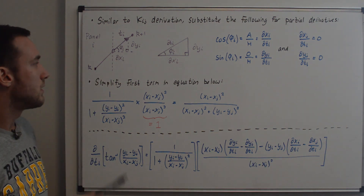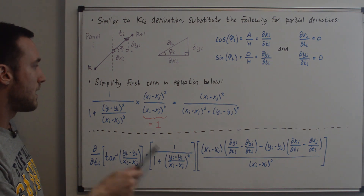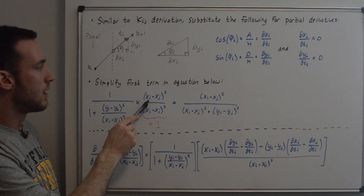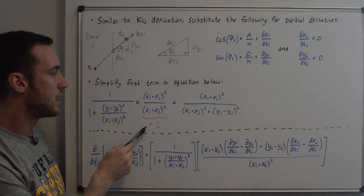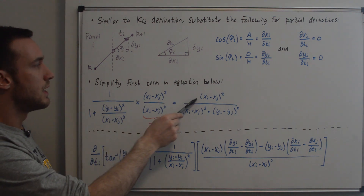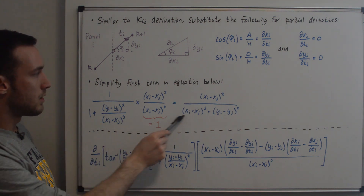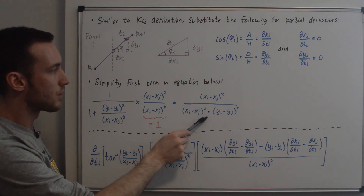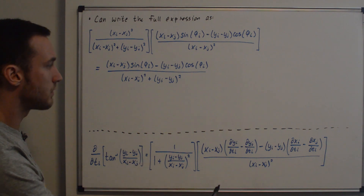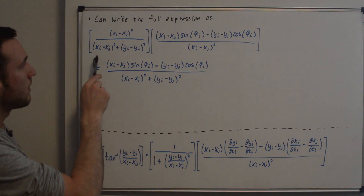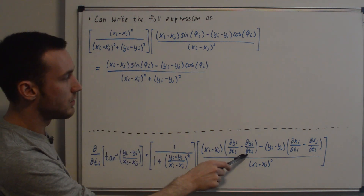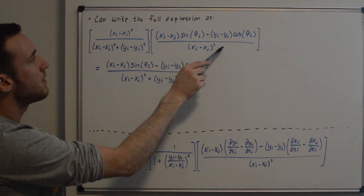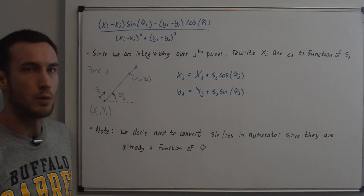Next we simplify the first term in the equation. We break it out and multiply by (x_i minus x_j) squared over (x_i minus x_j) squared — which is just multiplying by one. In the numerator we get (x_i minus x_j) squared; the denominator has that term times one, and multiplying gives (y_i minus y_j) squared. Combining results, the numerator and denominator cancel appropriately, leaving us with the simplified expression, which is shown on the current whiteboard with the sine and cosine substitutions already plugged in.